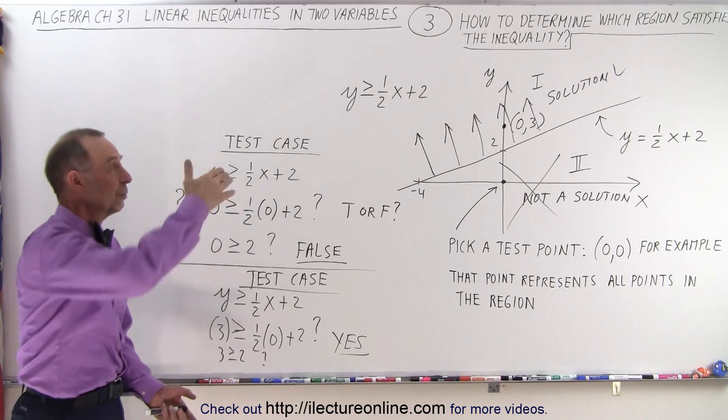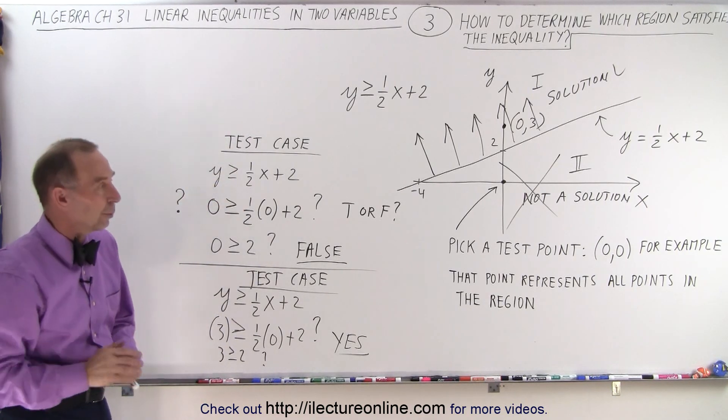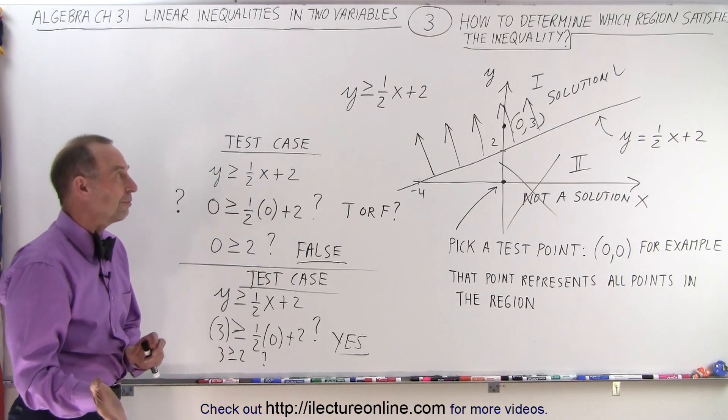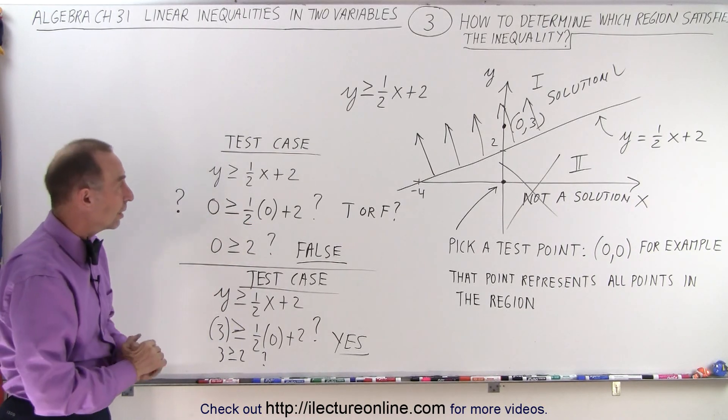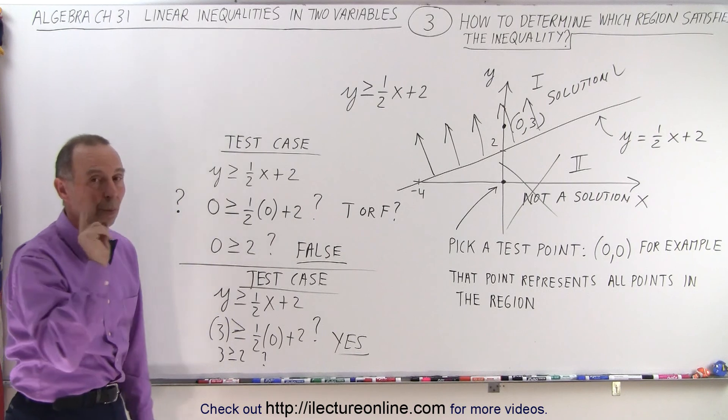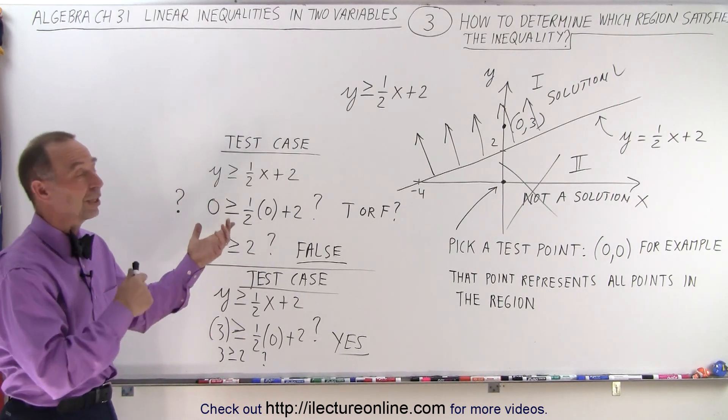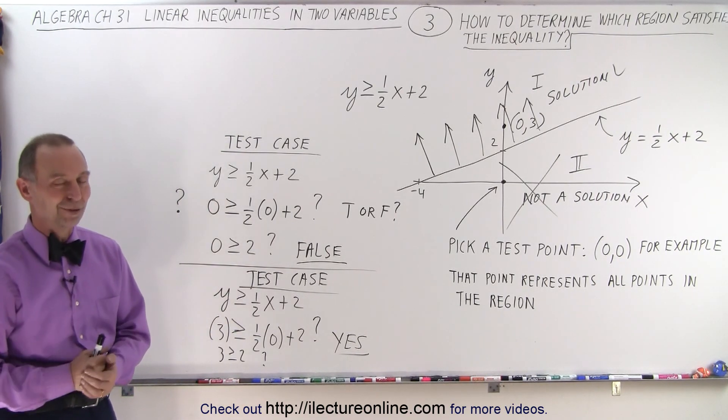We could have picked a point in one region or the other region. We only need it once. Whether or not we find the points that satisfy or don't satisfy the inequality simply depends upon the outcome of that one picked point. It works either way. And that is how it's done.